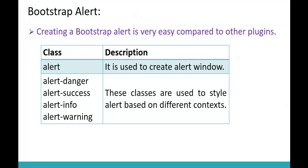Let's understand that very clearly. Keep in mind, creating a Bootstrap Alert is very easy when compared to other plugins. Here is a list of classes. Using these set of classes, we can create a Bootstrap Alert. The basic class Alert is used to create the alert window. And these four classes — Alert-Danger, Alert-Success, Alert-Info, and Alert-Warning — represent the contextual classes and they apply the style based on the context.